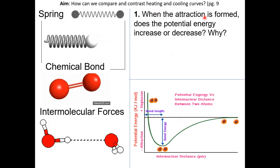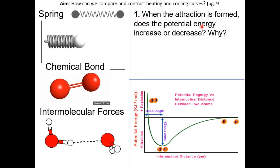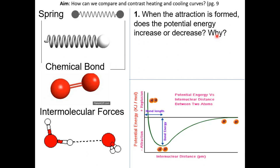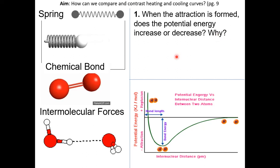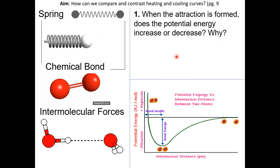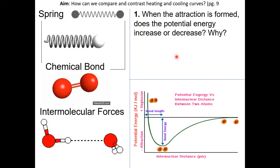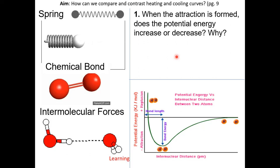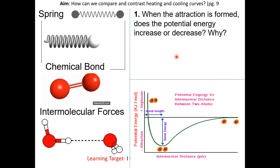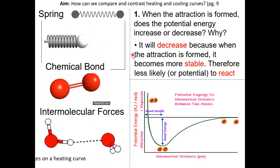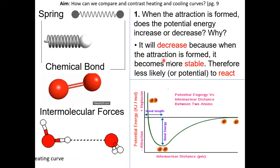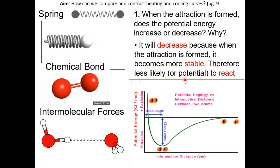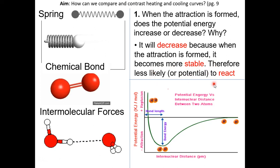When the attraction is formed, does potential energy increase or decrease, and why? Remember: breaking is endothermic, forming is exothermic. When you form an attraction, you release energy. Therefore, the potential energy will decrease. When the potential energy decreases, it becomes more stable.